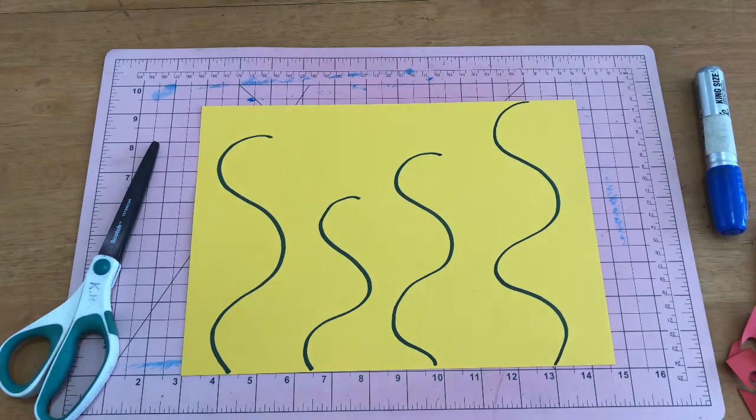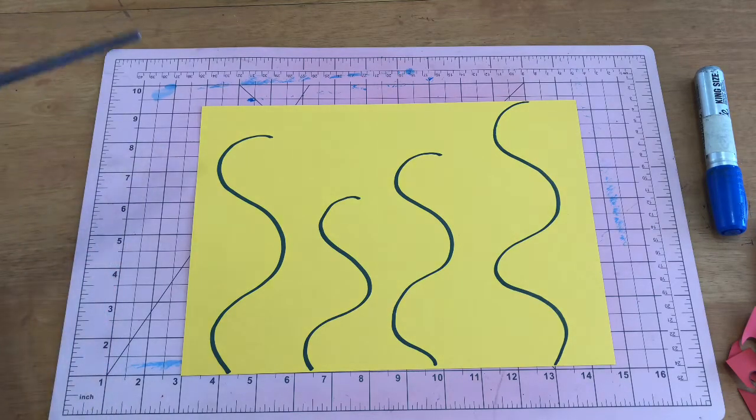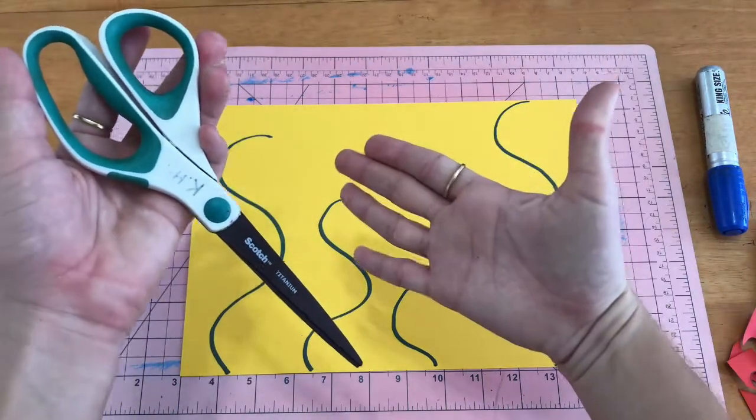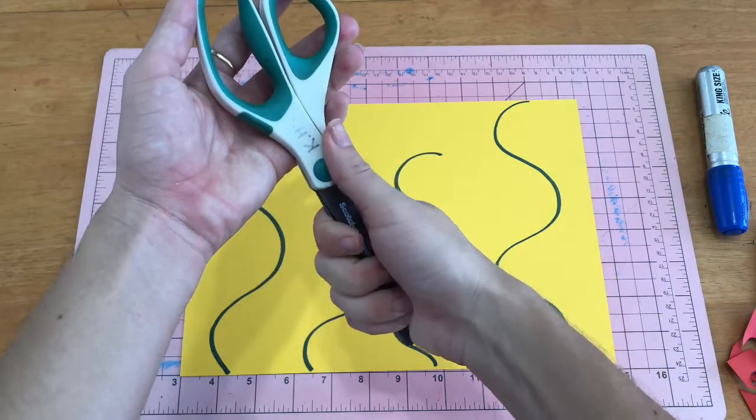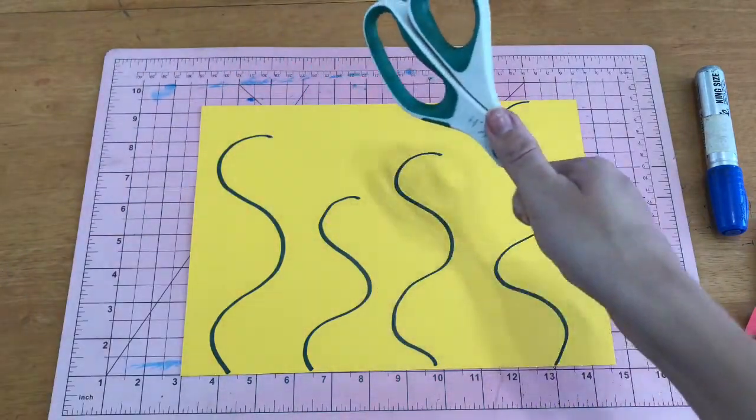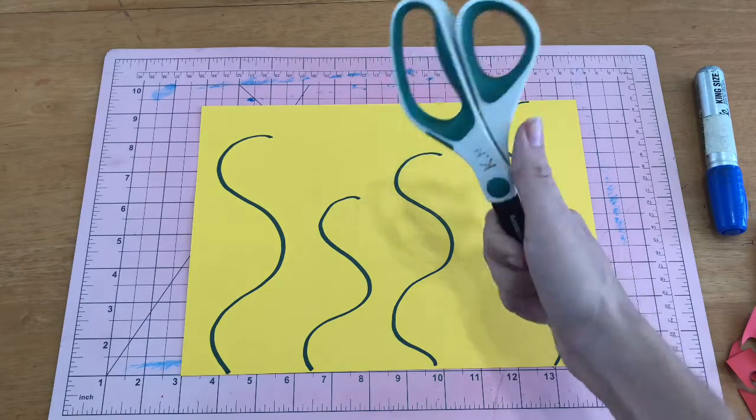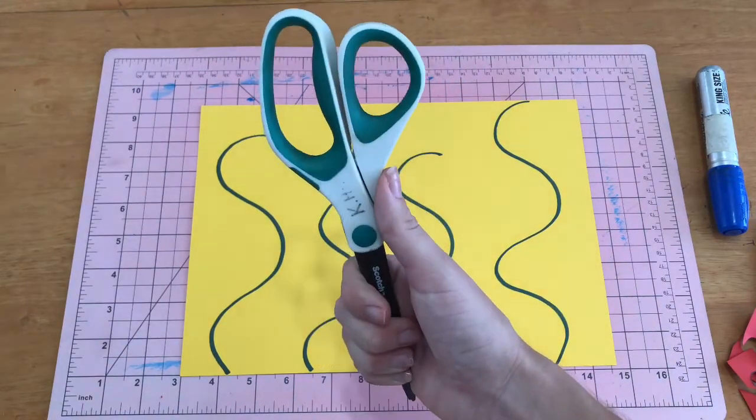So remember, scissor safety. If you're holding your scissors and walking with it, you take your hand, wrap it around the blades, and you hold it down at your side. You don't hold it in front of you like this. That's not safe.